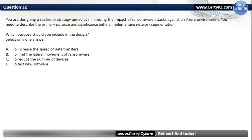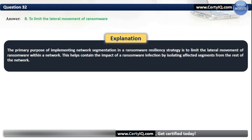Question 32. You are designing a resiliency strategy aimed at minimizing the impact of ransomware attacks against an Azure environment. You need to describe the primary purpose behind implementing network segmentation. The correct option is B: To limit the lateral movement of ransomware. Network segmentation helps contain the impact of a ransomware infection by isolating affected segments from the rest of the network.